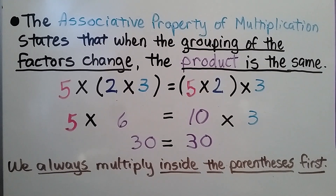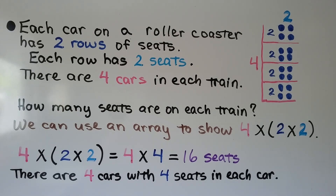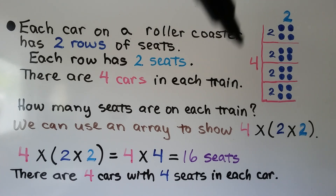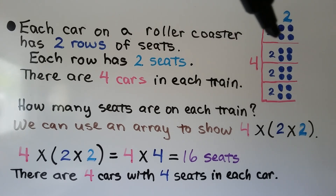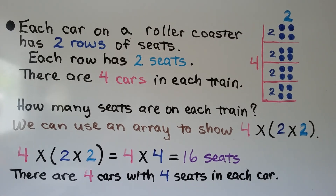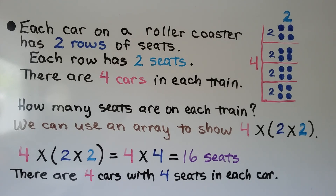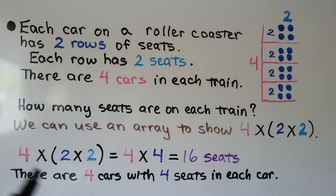Each car on a roller coaster has two rows of seats, and each row has two seats. There are four cars in each train. How many seats are on the train? We can use an array to show four cars with two rows of seats with two seats in each row. We have (4 × 2) × 2. We do 2 times 2 first, so we have 4 times 4 — there are 16 seats. There are four cars with four seats in each car.